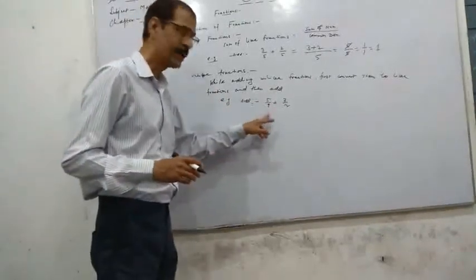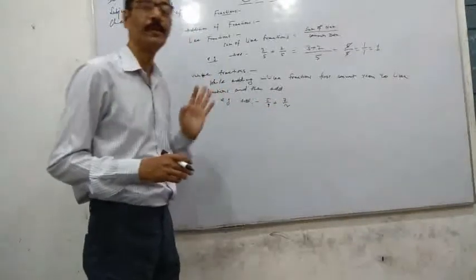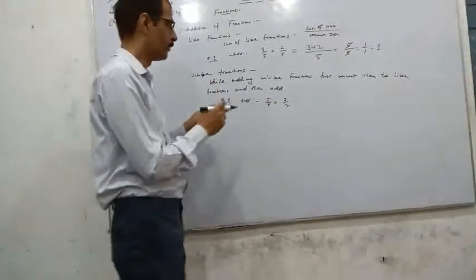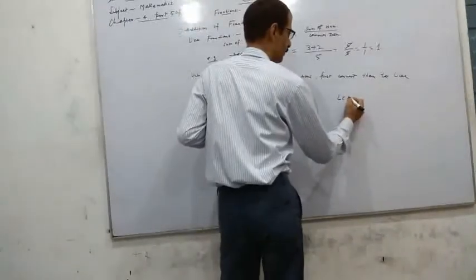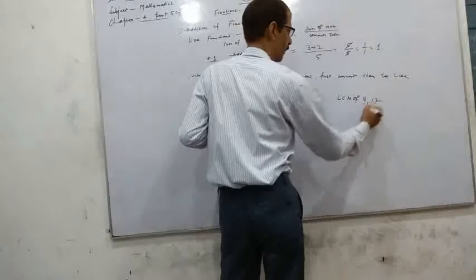So here is 5 by 9 plus 7 by 12 is given. 9 and 12, so take the LCM of 9 and 12.